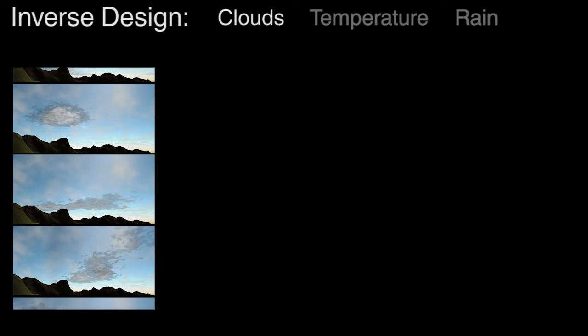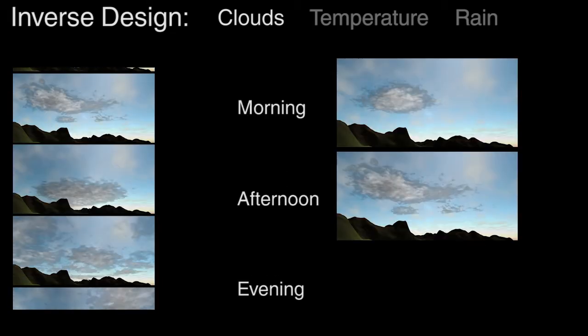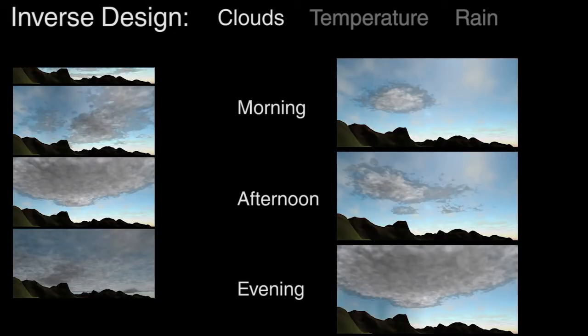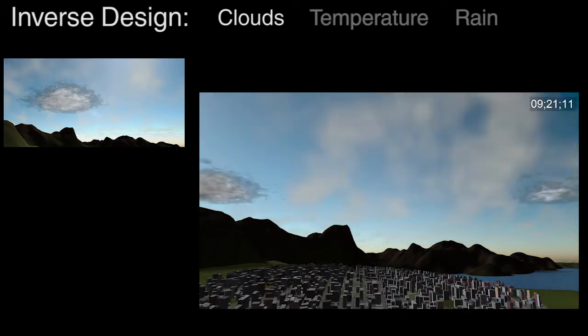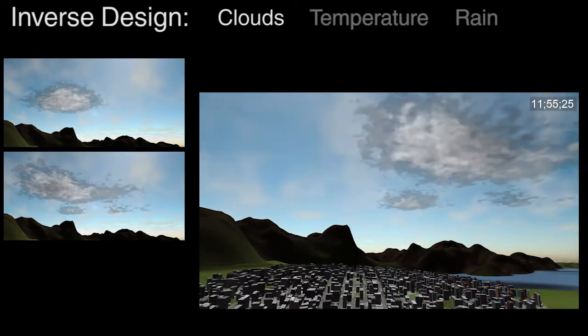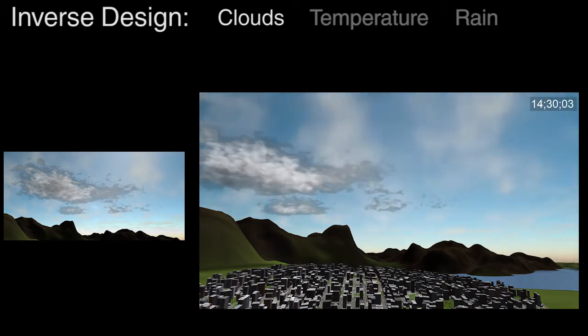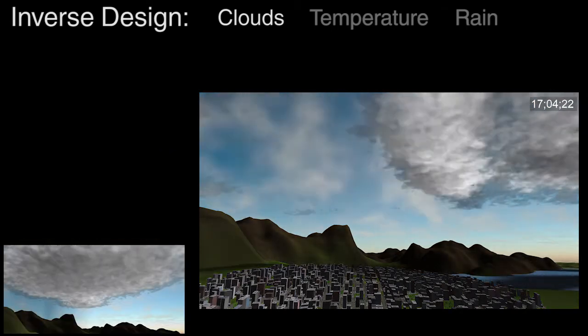Sometimes a desired behavior is not possible because of the constraints of a local physically-based system. In this case, the user selects the weather characteristics, and our system dynamically changes the boundary conditions so as to provide the desired behavior over time.